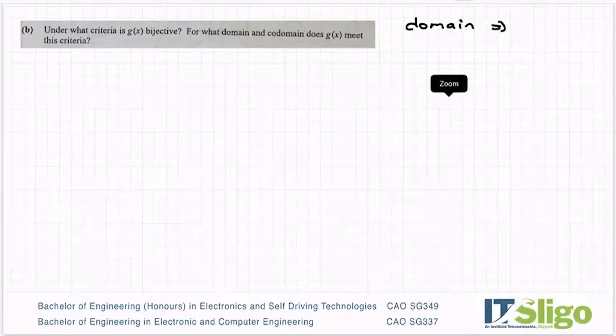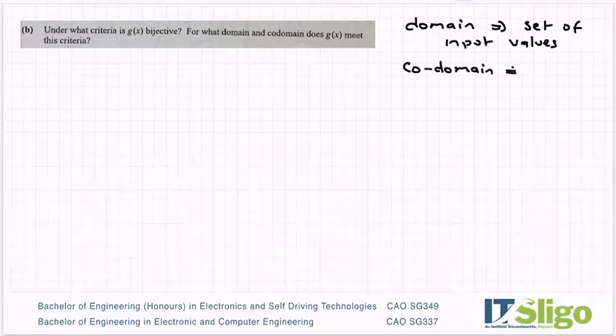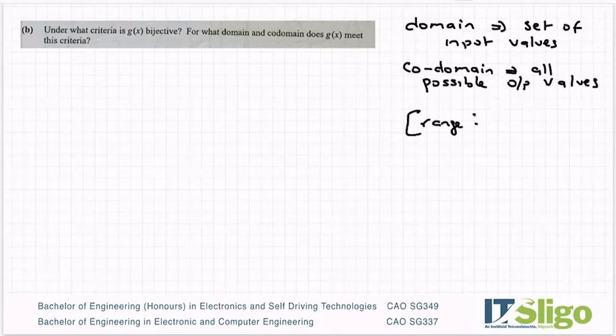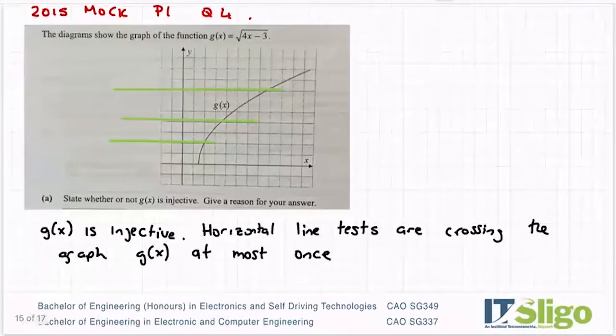The domain is the set of input values. The codomain is the set of all possible output values. And the one they haven't mentioned here is the range which is the set of output values. Codomain and range are slightly different. Range are the actual output values of that function. Codomain is all the possible output values that exist.